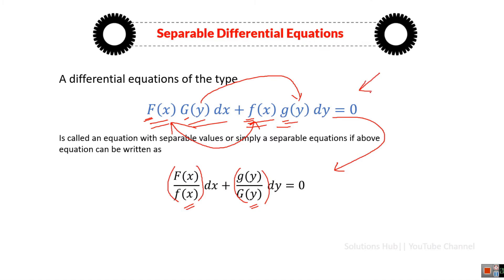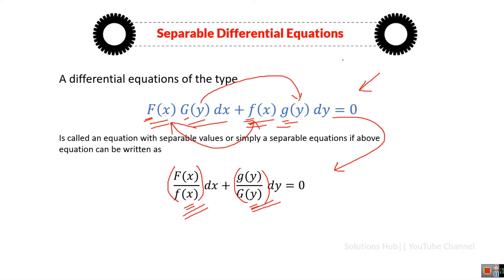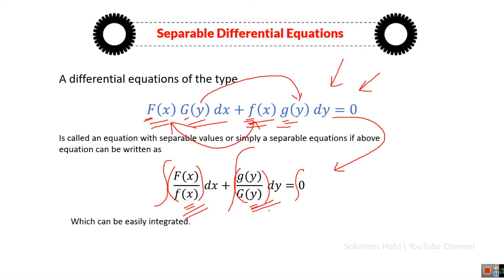That particular differential equation will be called a separable differential equation. For an equation to be separable, the only requirement is that you are able to separate the function of X and the function of Y. After separating them, you simply integrate both sides of the equation and you will get the desired result — that is the solution of the separable differential equation.